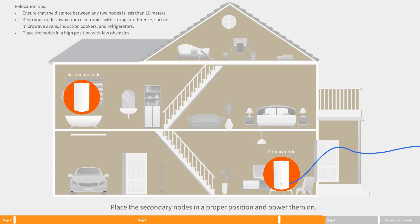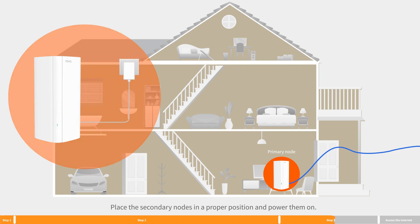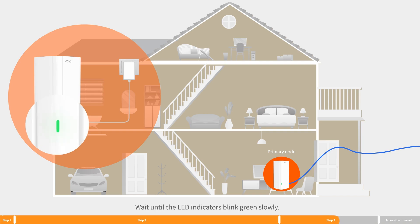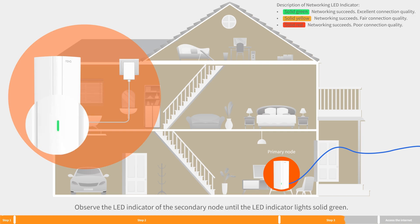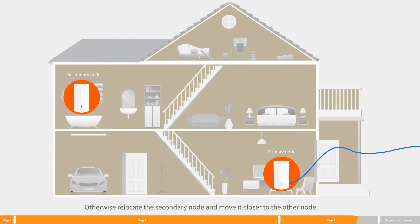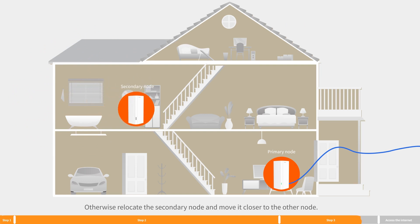Place the secondary nodes in a proper position and power them on. Wait until the LED indicators blink green slowly. Observe the LED indicator of the secondary node until it lights solid green. Otherwise, relocate the secondary node and move it closer to the other node.